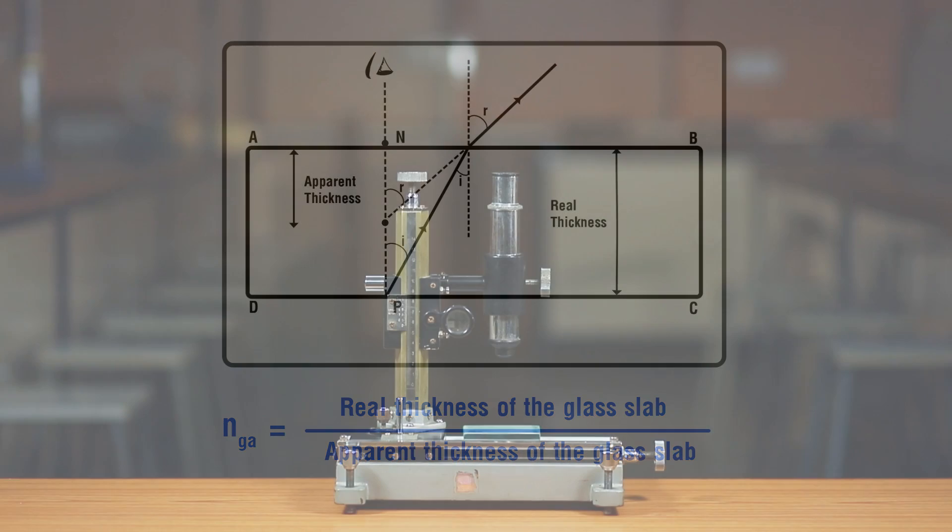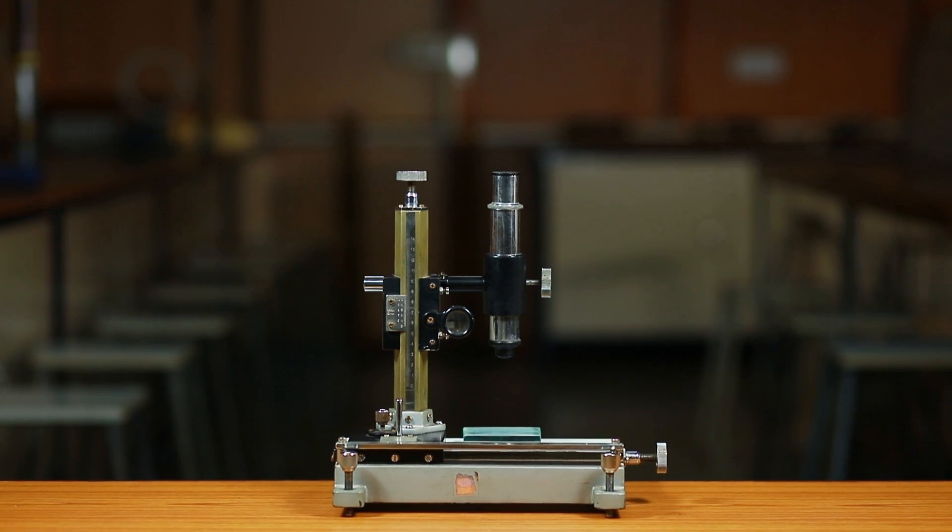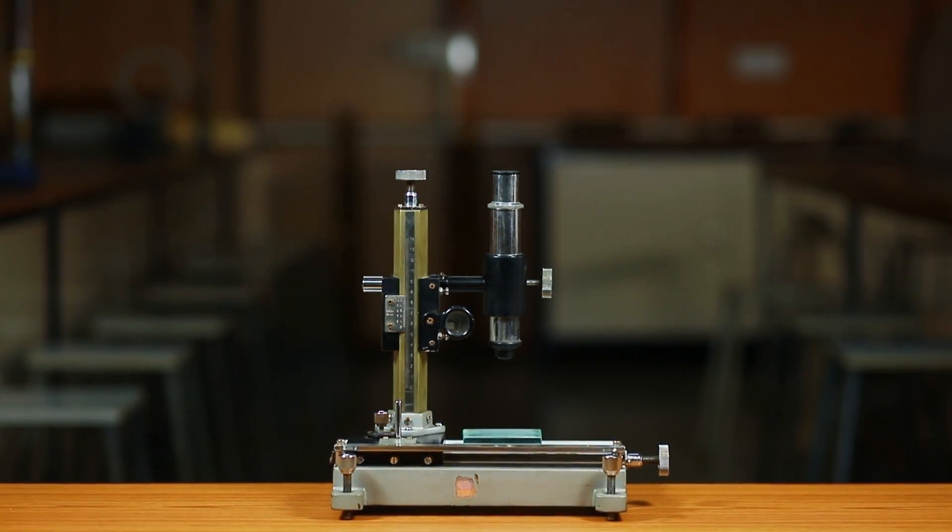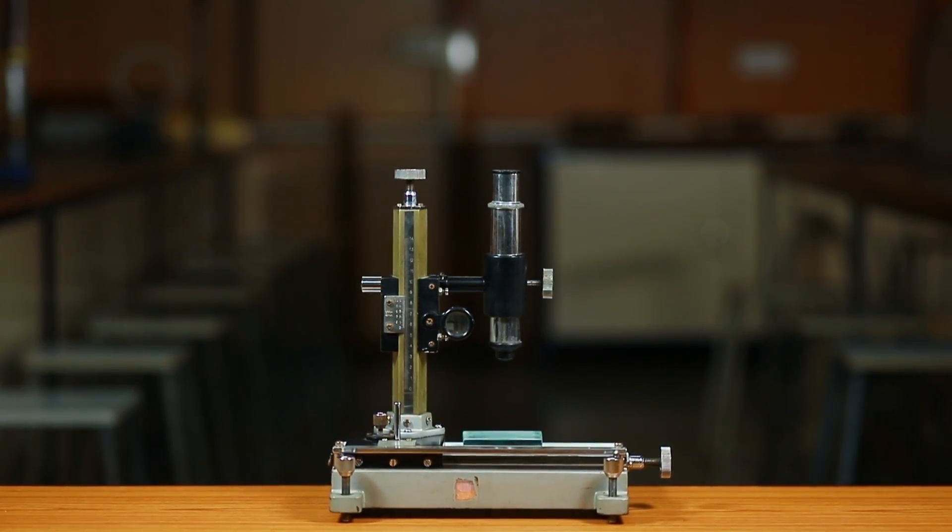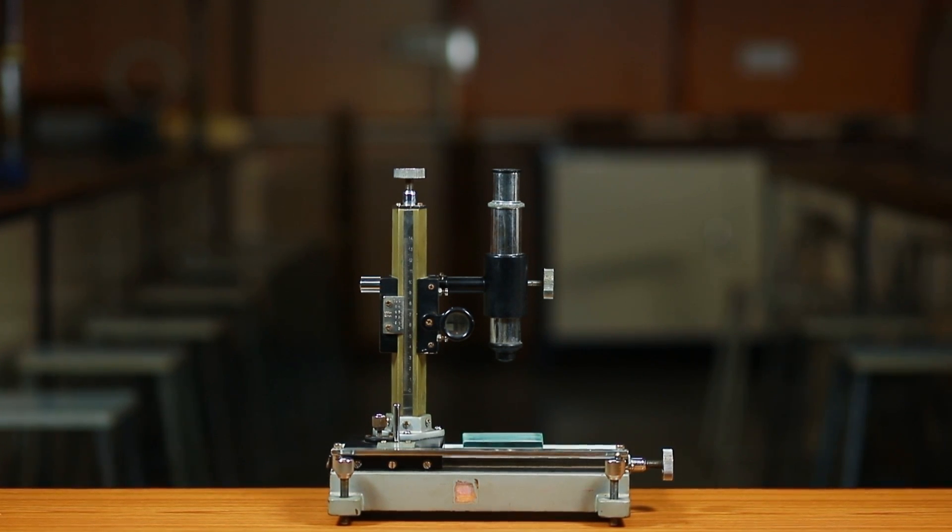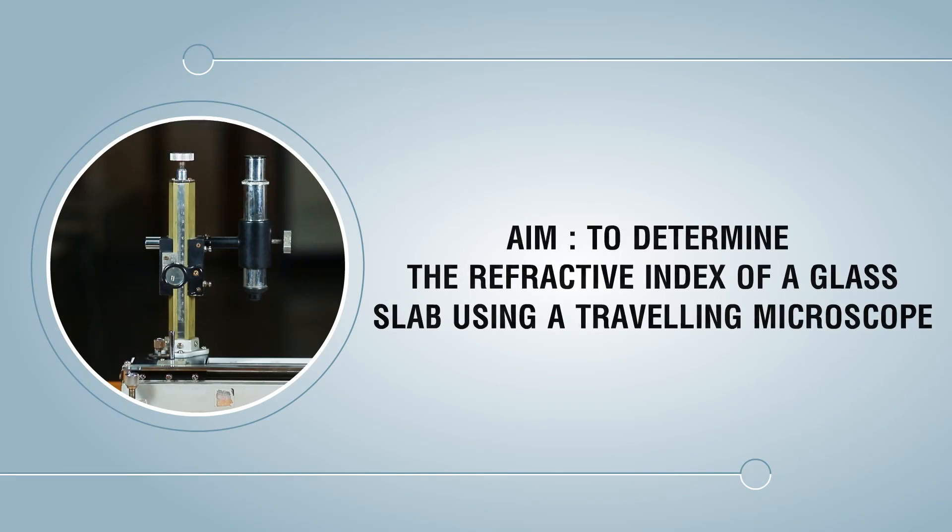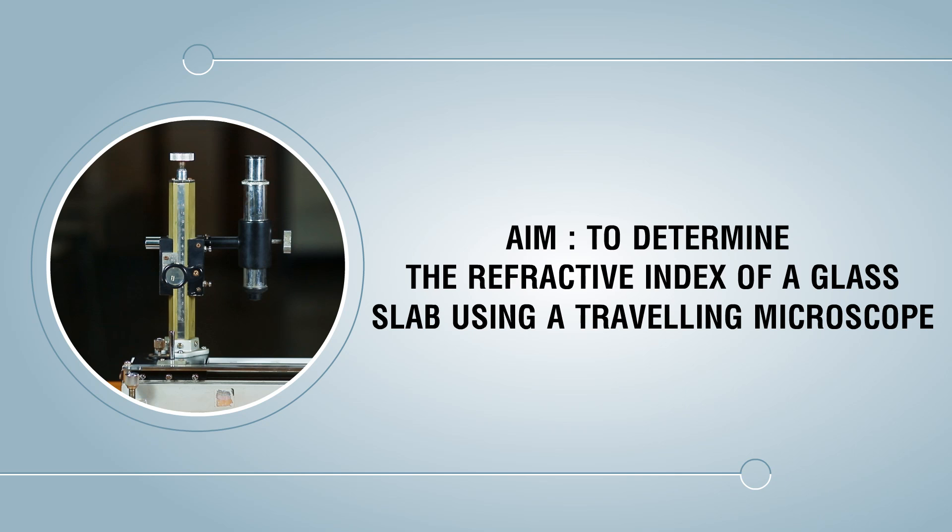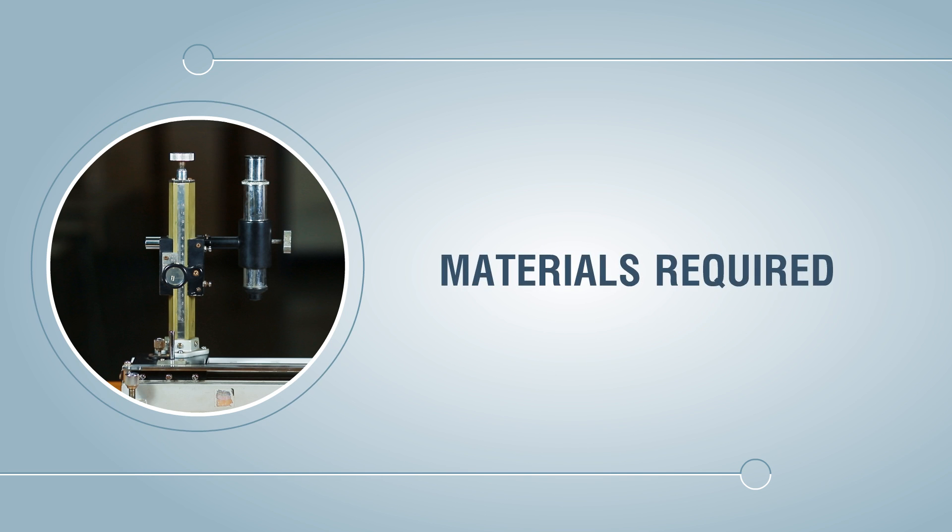A travelling microscope can be used to find the real and apparent thickness of the glass slab and hence calculate its refractive index. Aim: to determine refractive index of a glass slab using a travelling microscope.